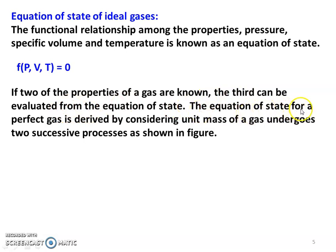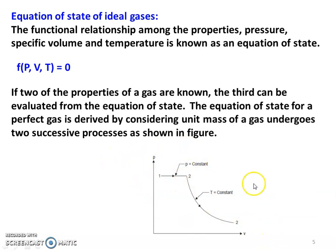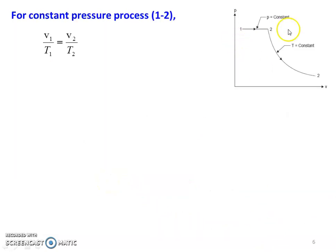The equation of state for a perfect gas is derived by considering unit mass of gas undergoing two successive processes as shown in the figure: a constant pressure process from 1 to 2, and a constant temperature process from 2 to 3, in the pressure-volume diagram. From this two-process approach, we can derive the perfect gas equation.